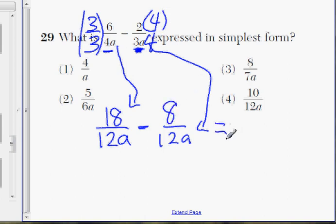Now we're going to subtract. We can subtract now because they both have the same common denominator. 18 minus 8 on the top is going to be 10. And on the bottom, it's going to be 12a. We don't subtract the bottom, we just subtract the numerator.